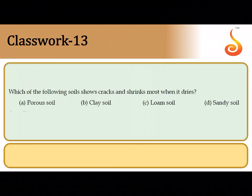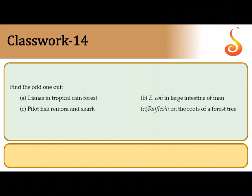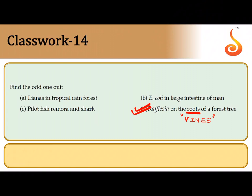The thirteenth question: which soil shows cracks and shrinks most when it dries? It has high porosity, holds a lot of water, and becomes very tough when dry — it is clay soil. The correct answer is option B. The fourteenth question asks for the odd one out: Rafflesia is incorrectly described as growing on roots. Rafflesia actually grows on the aerial shoots of vines — it penetrates into the vine of the host plant and is a holoparasite. Only its giant flower is visible, so the last option is odd.